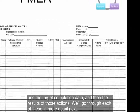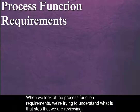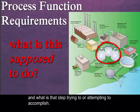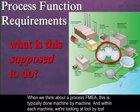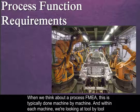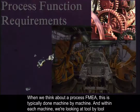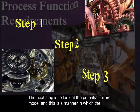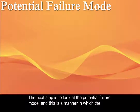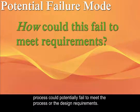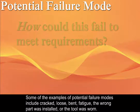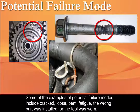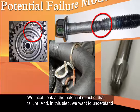When we look at the process function requirements, we're trying to understand what is that step that we are reviewing and what is that step trying to accomplish. When we think about a process FMEA, this is typically done machine by machine, and within each machine we're looking at tool by tool to make sure that we're capturing every step of the process in the order that it occurs. The next step is to look at the potential failure mode, which is the manner in which the process could potentially fail to meet the process or the design requirements. Some examples of potential failure modes include cracked, loose, bent, fatigue, the wrong part was installed, or the tool was worn.